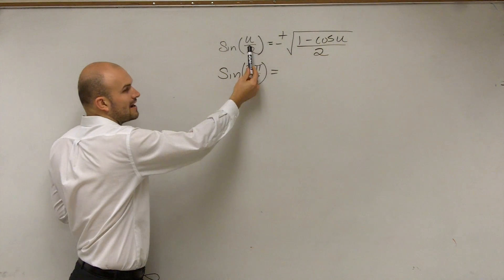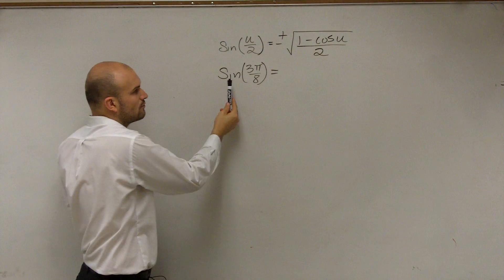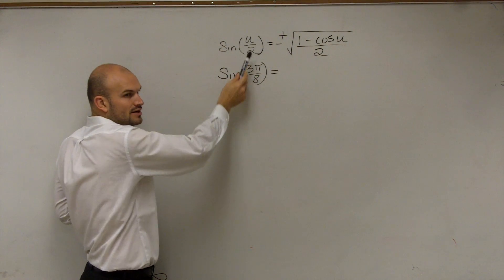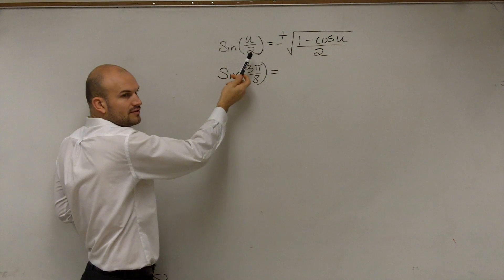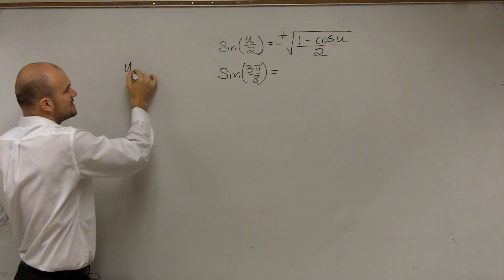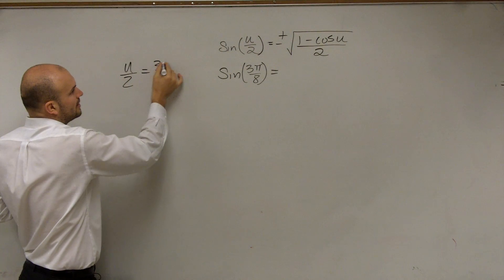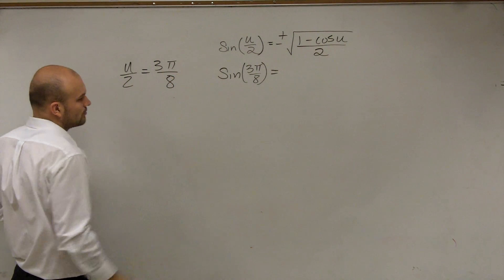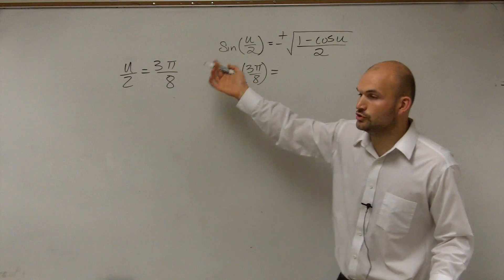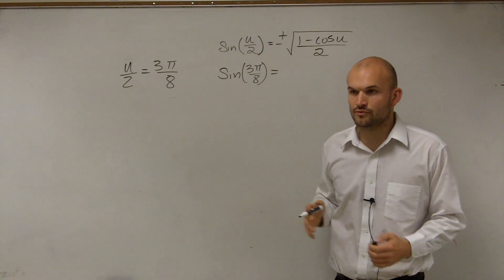If I say sine of u divided by 2 is equal to this, and then I say, what is sine of 3π over 8? First thing we know is these two are in the same spots, right? These are equivalent to each other. So if you kind of got stuck on this problem, the first step you're always going to want to do is set your half angle equal to your other half angle. So you can say that u divided by 2 is equal to 3π over 8.